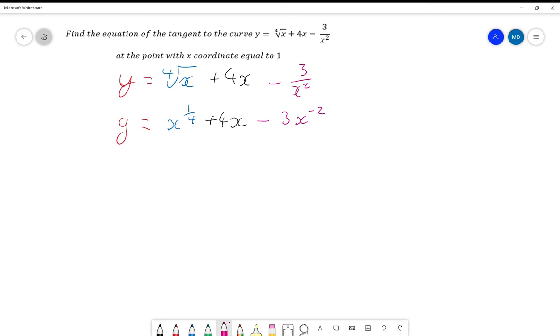And so now we can differentiate it. So dy by dx is going to be equal to one quarter of x to the minus three quarters, because we have to subtract one from a quarter, plus 4. And now here we're going to multiply by negative 2, and we've already got a negative, so it's going to be plus 6x, and we still have to subtract one, so to the minus 3.